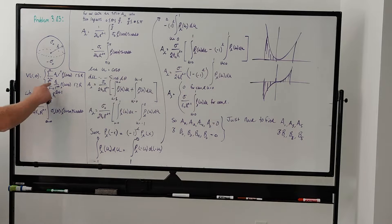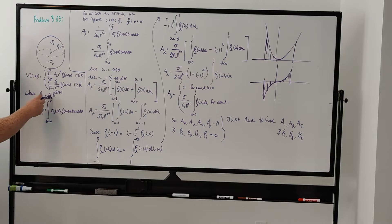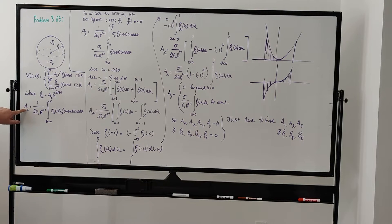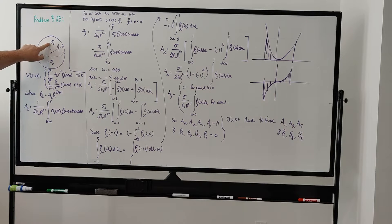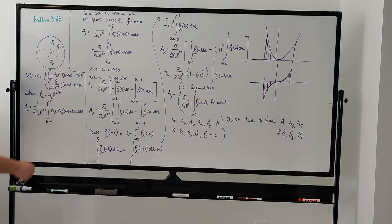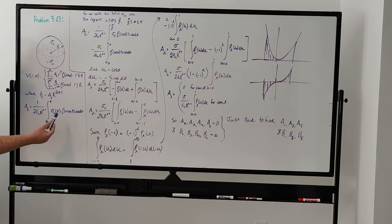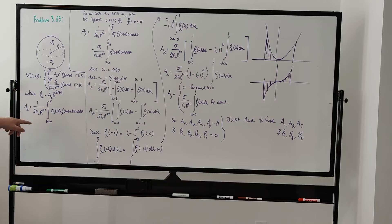We're going to start with inside the sphere and then do outside. Don't forget that there's a relationship between the coefficients: b sub l can be expressed as a sub l times the radius to the 2l plus 1 power. This is handy so we don't have to go through the integration to do the calculations for b sub l. Now, a sub l is given by a couple different ways — you could use expressions involving the potential if you know it on the surface, but in this case we are given the surface charge density.